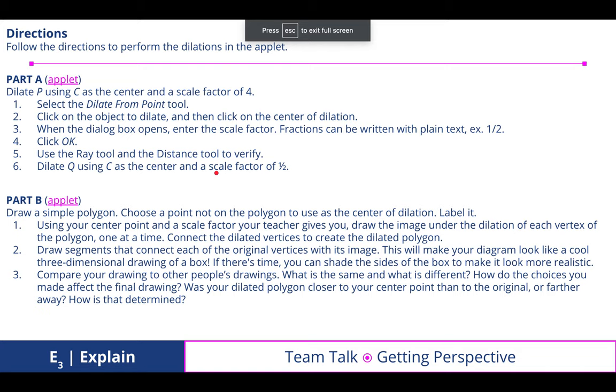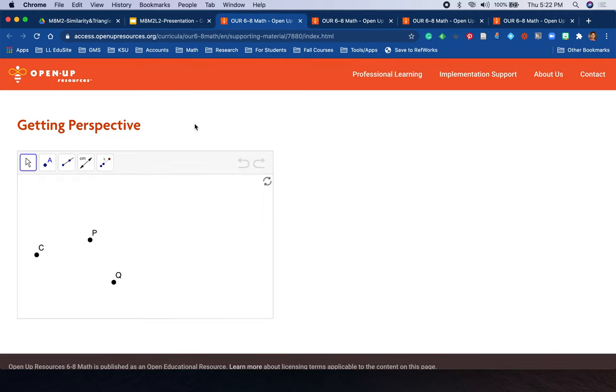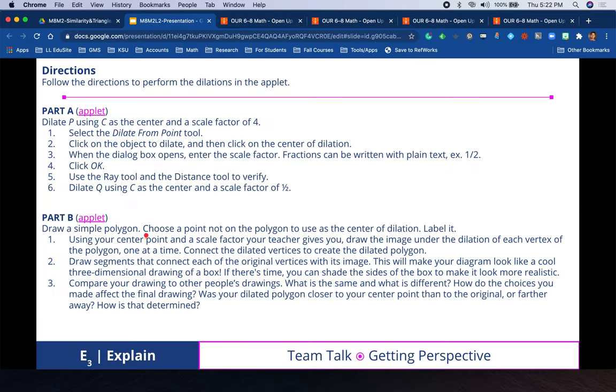Then we looked at another group activity, Getting Perspective. This is looking at two different applets, one with center C where we're trying to dilate P with a scale factor of 4. We worked through this one together, and then I had you do the second one on your own.